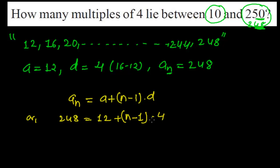So the common difference is 4, or 248 minus 12 is equals to (n-1) times 4, or what I can write 4(n-1). So (n-1) is equals to 248 minus 12, which is 236.